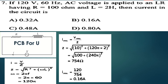If 120 volt 60 hertz AC voltage is applied to an LR circuit having R equal to some ohm and L equal to 20, find the current in this circuit. The value of Vrms is 120 volts, the frequency F is 60 hertz, and L is 20.